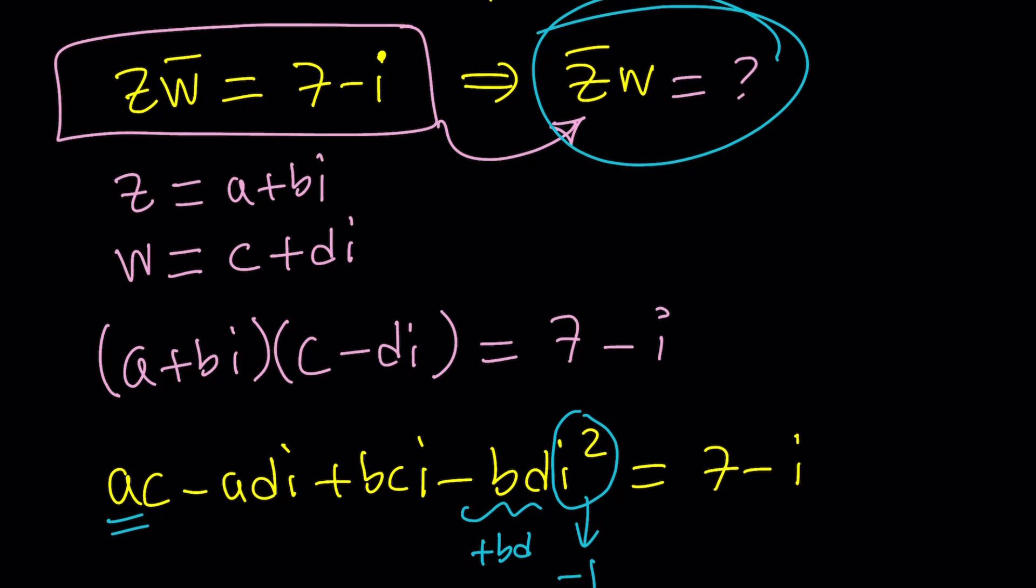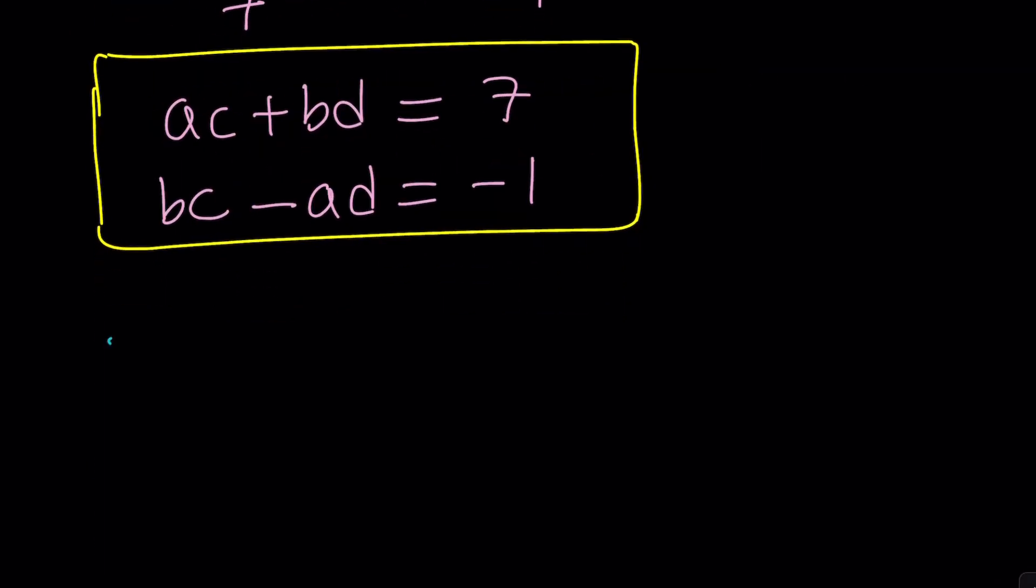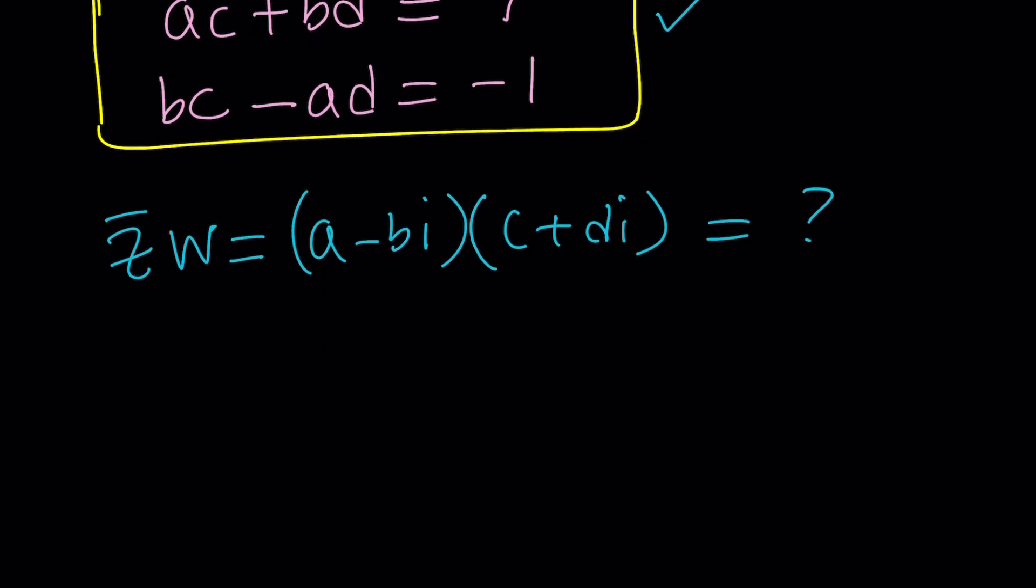Let's take a look at Z bar times W. That's what we're trying to find out. What is that equal to in terms of a, b, c, d? We can write it. Z is a plus bi, so Z bar is a minus bi. And W is c plus di. We don't know what this equals—that's what we're trying to find. But we do have a system of equations which is hopefully going to be helpful. Let's distribute just like before.